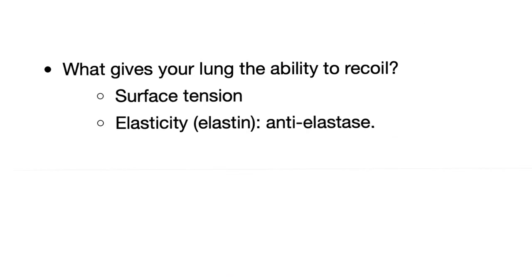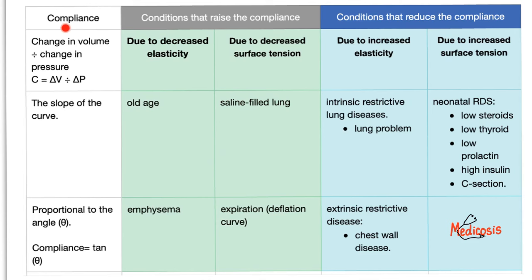What gives your lung the ability to recoil on its own? Number one, surface tension — by far the most important factor. Then elasticity, thanks to elastin and collagen, and thanks to anti-elastase, which prevents elastin from being destroyed by elastase. In order to have greater compliance, you need either decreased elasticity or decreased surface tension. For reduced compliance and increased recoil, you need increased elasticity and increased surface tension.